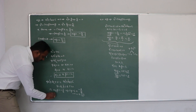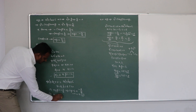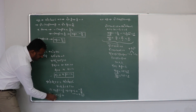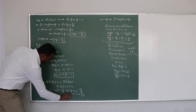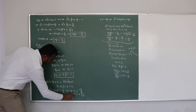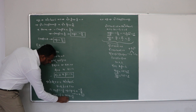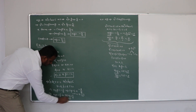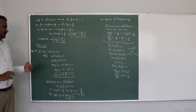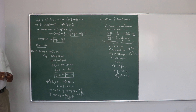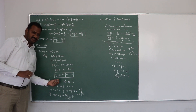Product of zeros: alpha times beta equals 0 times (minus 2) equals 0, and c/a equals 0 divided by 4 equals 0. So 0 equals 0 — product of zeros is also verified. Like this, we can find the sum and product of zeros and verify the relation between zeros and coefficients.